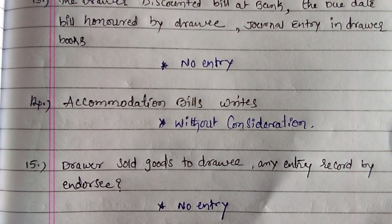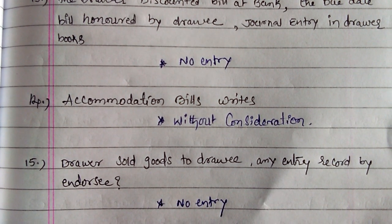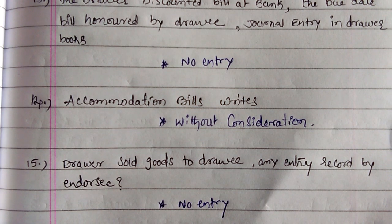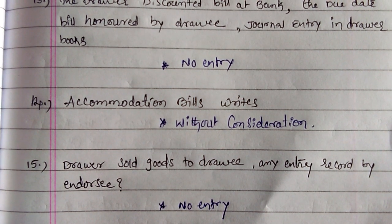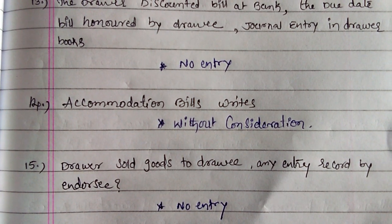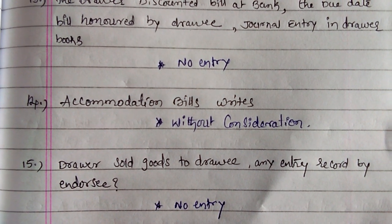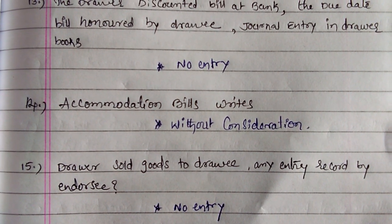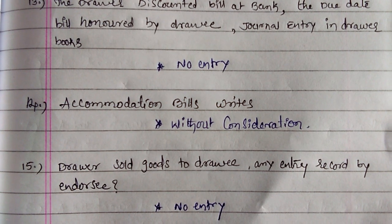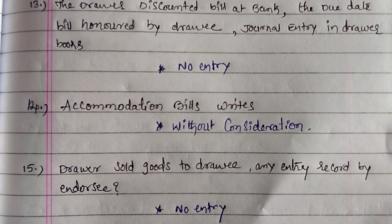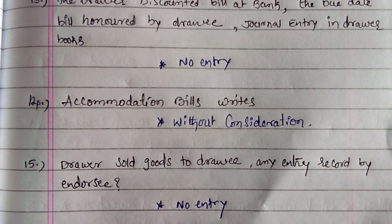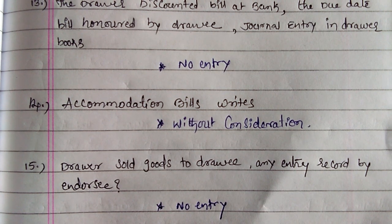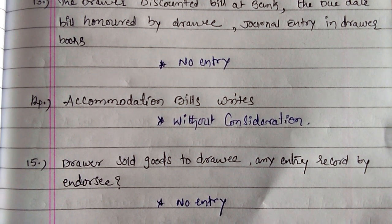Accommodation bills are written without consideration. Actually, accommodation bills are drawn for cash, for temporary necessity purposes only. So there are no goods, no selling or buying involved.